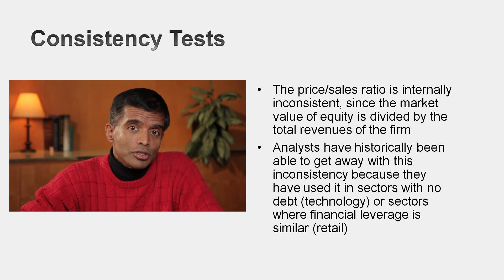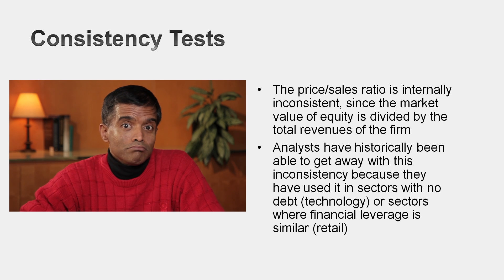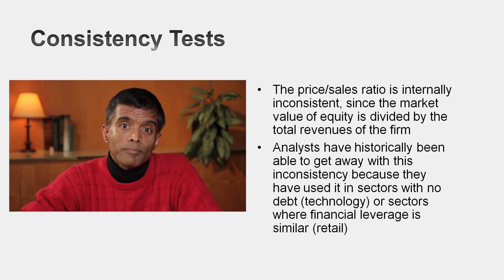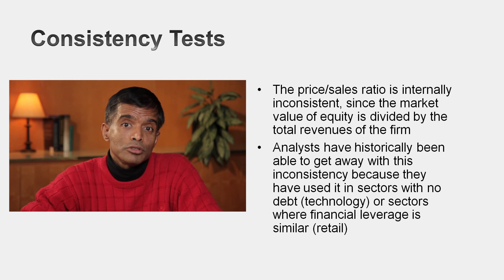The price-to-sales ratio still remains the dominant revenue multiple. In the two sectors where you see it used most often, analysts are saved by good luck. In the technology sector, those companies tend to have very little or no debt. In retailing, firms tend to have roughly the same debt ratios and financial leverage — though that's starting to change. Let's focus on price-to-sales ratios and see what the distribution looks like and what drives them.